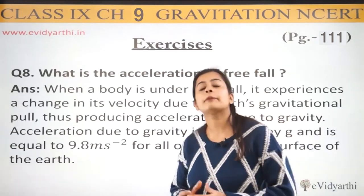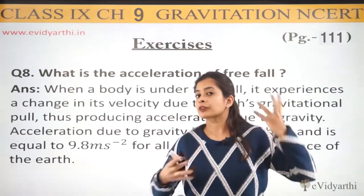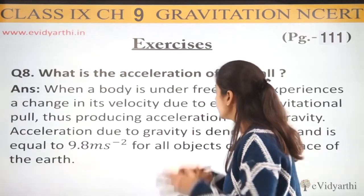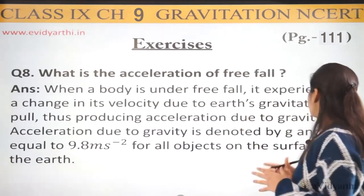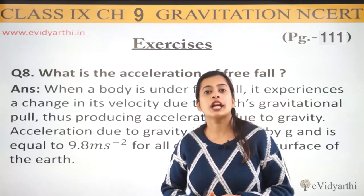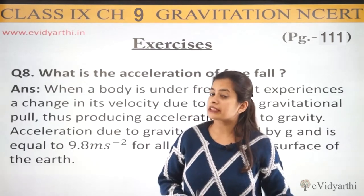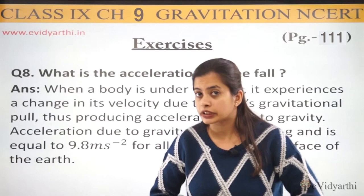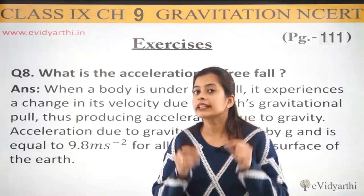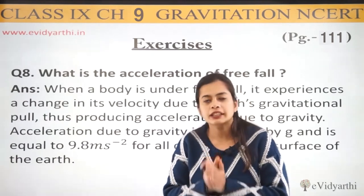So, whenever you read anywhere that there is a change in velocity — starting from rest, velocity is increasing — wherever a change is observed, that means acceleration is definitely present there. Acceleration due to gravity is denoted by g and is equal to 9.8 meter per second square. Earlier, when we studied motion or force, acceleration was always denoted by 'a'. But when we learn about acceleration in the context of gravitation, we denote it by g, and its value is constant at 9.8 meter per second square.